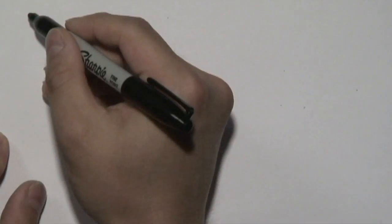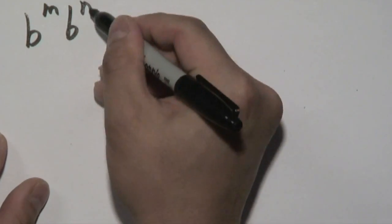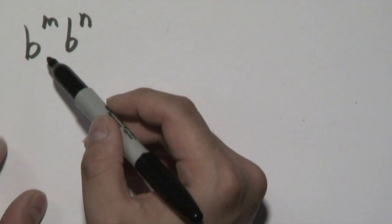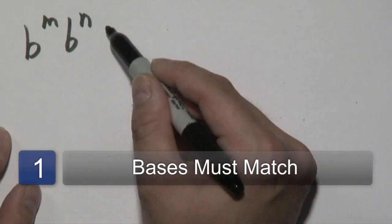One rule that you want to be aware of is this exponent rule here where you have b to the m times b to the n. Now you want to ensure that the bases do match, so if they don't, you cannot use this rule.